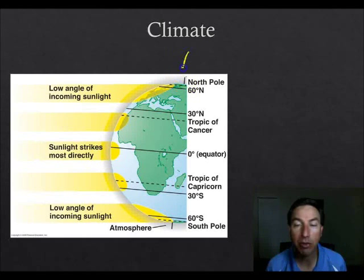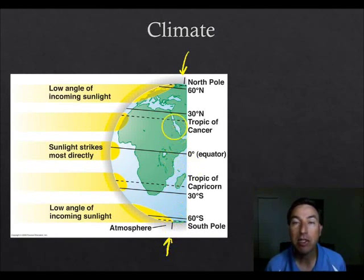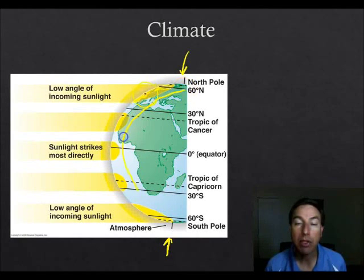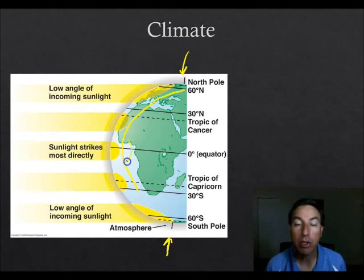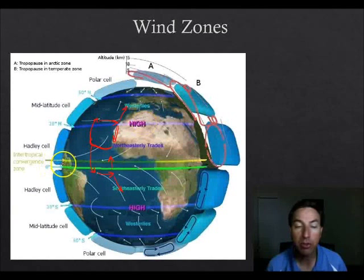Remember that the Earth is tilted on its axis, and because it's tilted, we get uneven heating across the planet. Also, the fact that it's a sphere causes sunlight to be spread out over the very northern and southern latitudes, whereas in the equatorial region we have very strong sunlight.